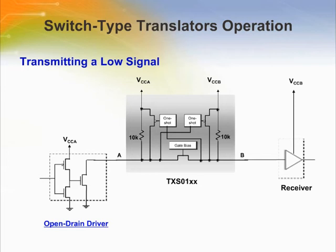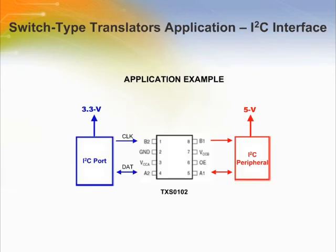Similarly, we show the device operation of transmitting a low signal. The TXS0102 is a two-channel switch type translator that can be used for level translation in I2C applications. In this example, it is shown performing 3.3V to 5V translation, but it can also be used for 1.8V to 3.3V translation.